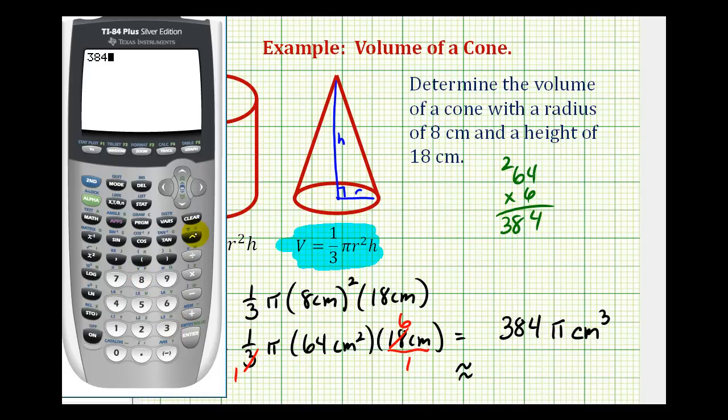The pi key on this calculator is right above the exponent key. So we'll press second and then the exponent key to access the pi. Press enter. So we'll say the volume is approximately 1206.4 cubic centimeters.